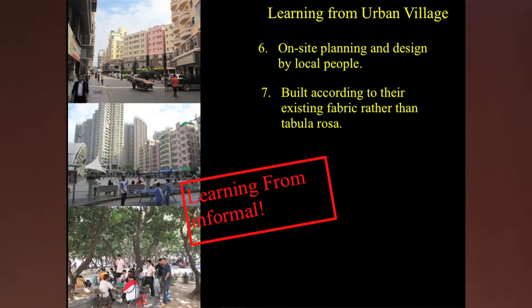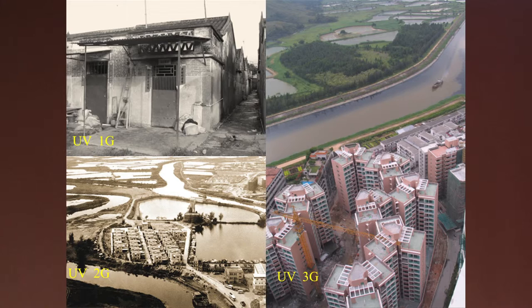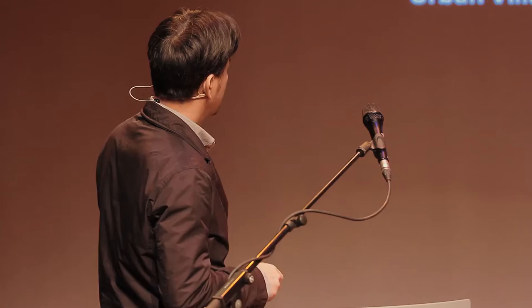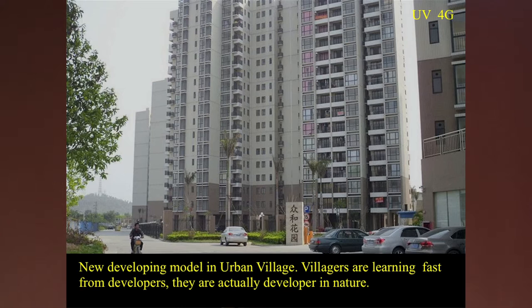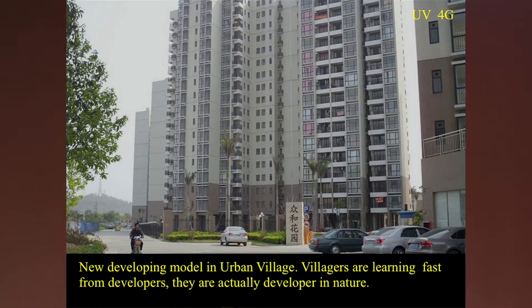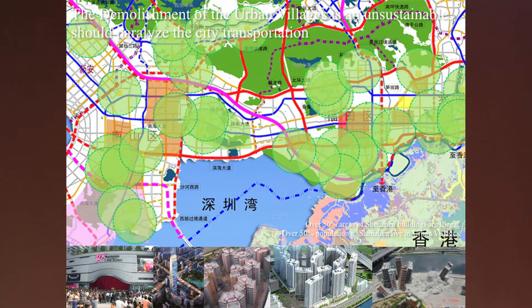There are different generations of urban village — this is the first, this is the second, this is the third, this is the fourth. But the urban village continues to evolve to the fourth generation through demolition and explosion. Even the villagers have learned from real estate developers to develop directly as commercial residences. More and more urban villages are torn down, creating huge problems for traffic and gentrification.